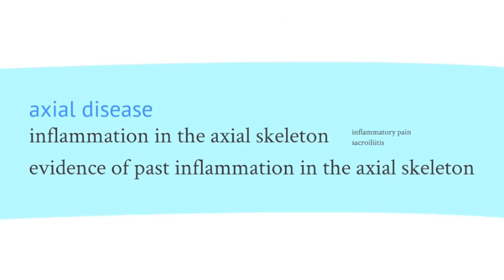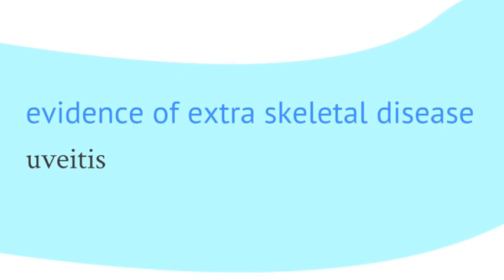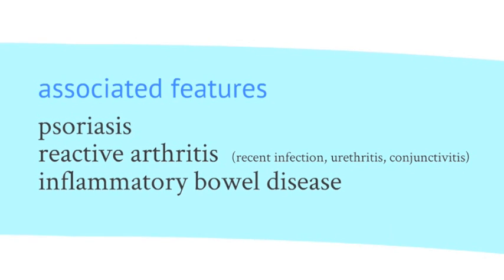For the diagnosis, we need evidence of axial disease - inflammation of the axial skeleton, inflammatory pain or sacroiliitis, evidence of past inflammation in the axial skeleton, and that's usually the evidence of loss of movement. Extra-axial disease with asymmetric arthritis, the presence or history of enthesitis, and the presence or history of dactylitis. Evidence of extraskeletal disease - uveitis that usually is evident on history. Associated features: psoriasis, reactive arthritis, and inflammatory bowel disease are often associated with a spondylitis that is clinically fairly indistinguishable from ankylosing spondylitis.